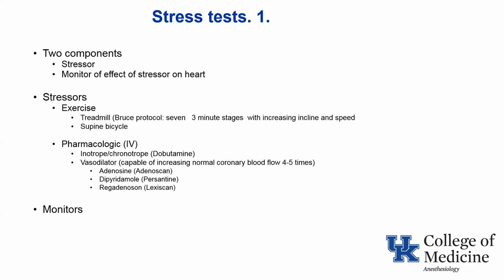Many patients will undergo a stress test. There are always two components: the stressor and the monitor used to assess the effect of the stressor on the heart. There are two forms of stressors — exercise and pharmacologic. Exercise is typically on a treadmill using the Bruce protocol, which has seven stages of three-minute duration with progressively increasing incline and speed. Occasionally exercise is done on a supine bicycle. When pharmacologic stress is used, one form is an inotrope and chronotrope such as dobutamine.